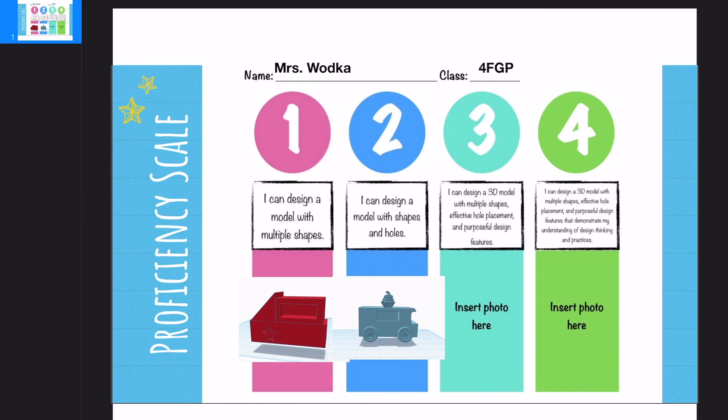The only thing you need to turn in right now for me are these two: Proficiency one, I can design a model with multiple shapes, and then number two, I can design a model with shapes and holes. We're not getting super fancy yet. So please don't worry about that.